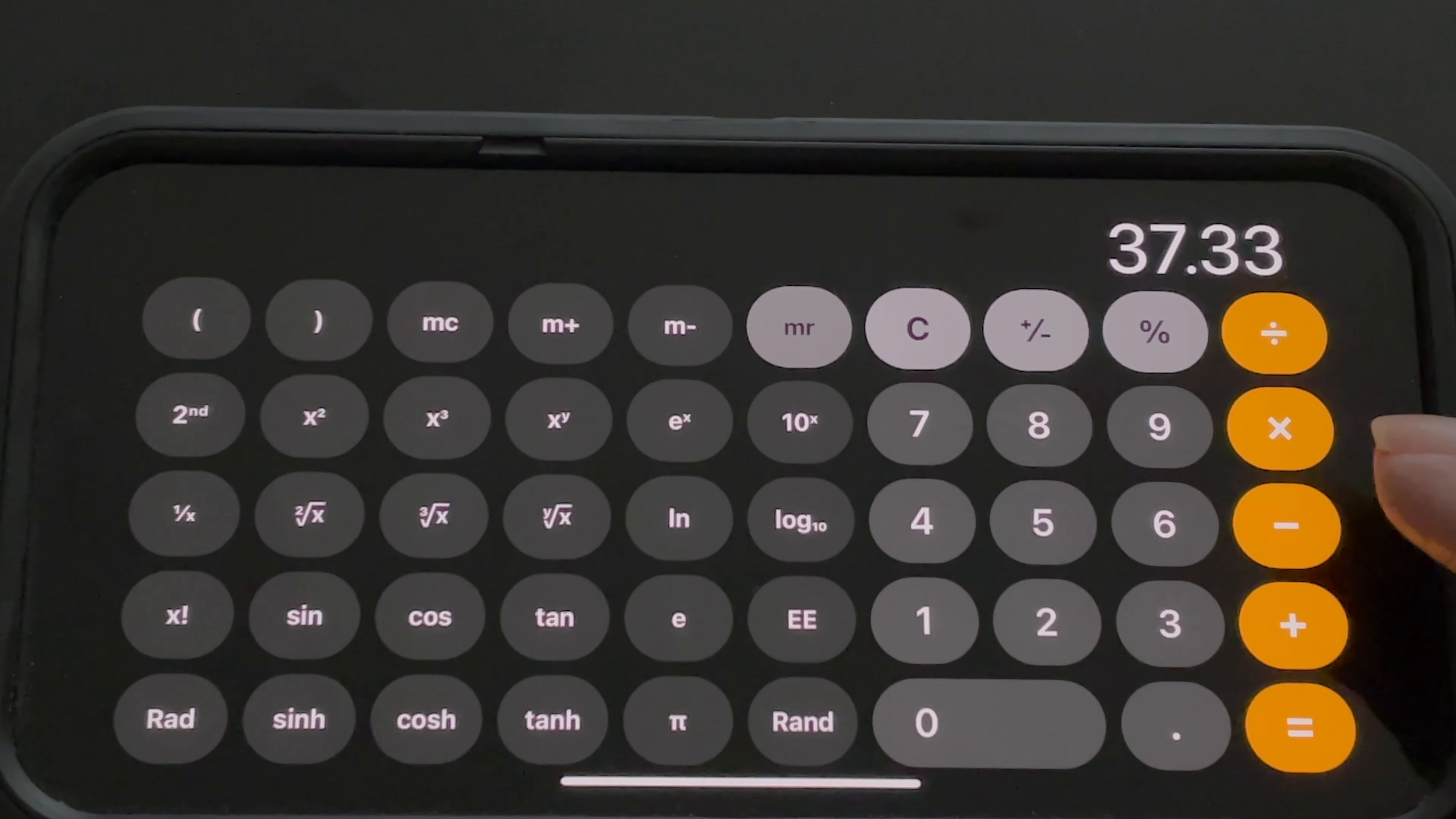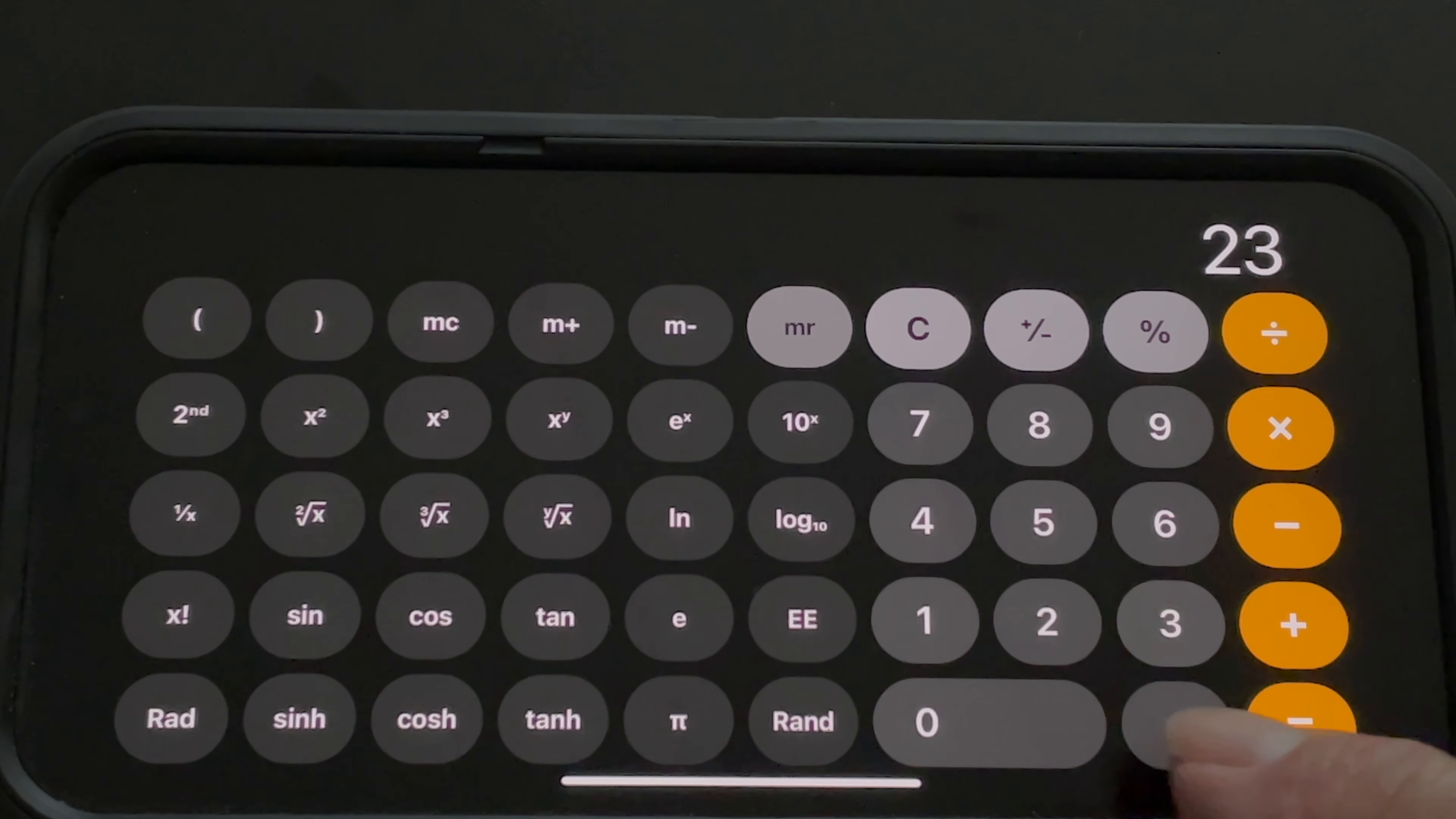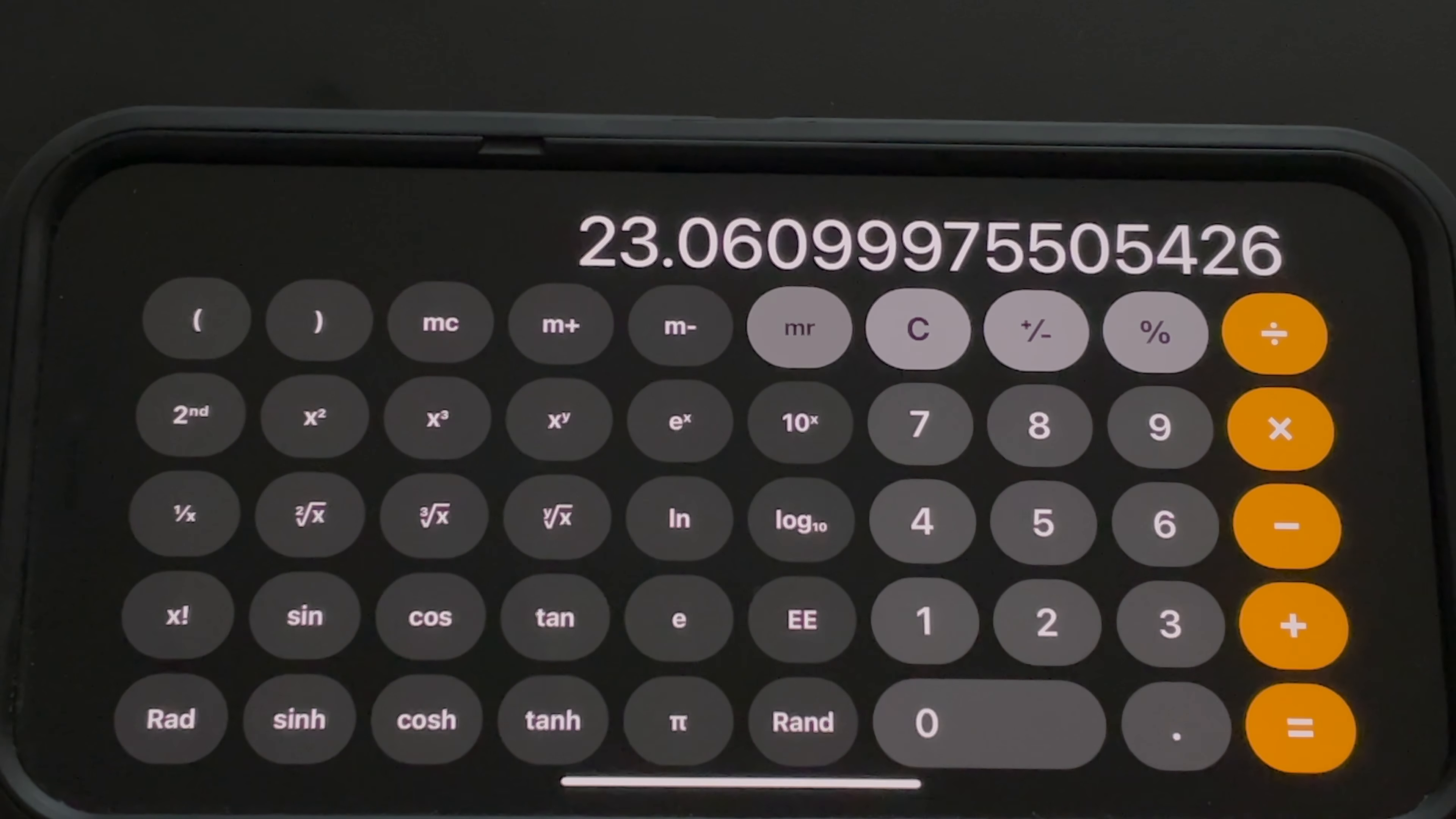I'll take the tangent of that. Multiply that times the distance where my feet, the mark of my feet was at 23.25 feet. That equals that. Then what we're going to do is add that plus memory recall, the 5.33 eye height. That equals 23.06.